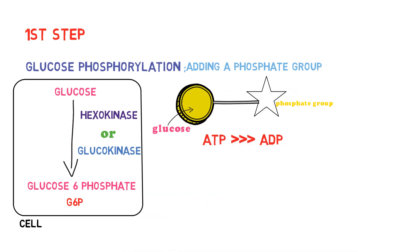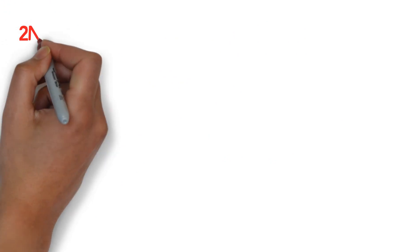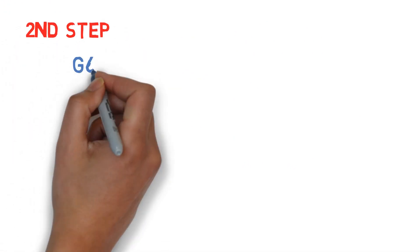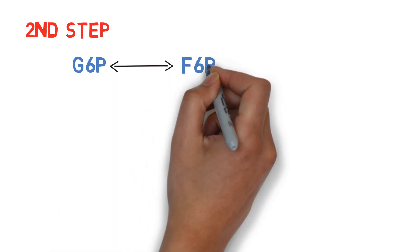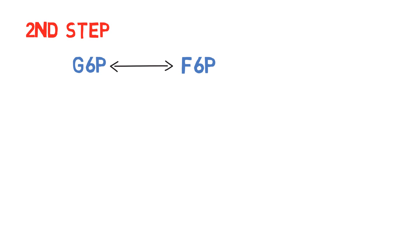The second main step: G6P converts into fructose-6-phosphate by a reversible reaction. Fructose-6-phosphate can also convert back into G6P, so this is not an important reaction on its own.